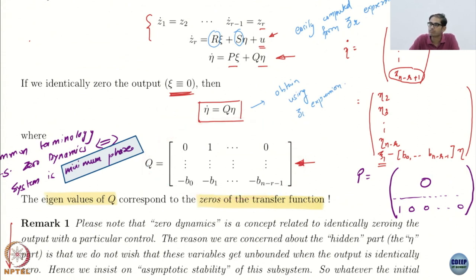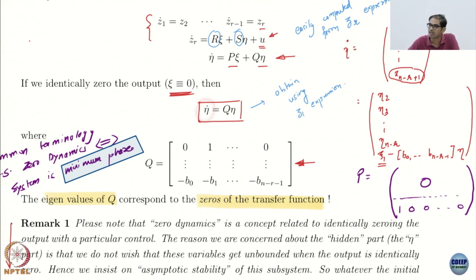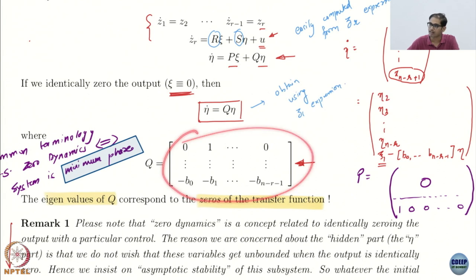You have a peak psi and a Q eta, and Q is coming from those coefficients. If psi is 0, the zero dynamics is just the eta dynamics governed by Q eta. This is an n minus r dimensional system. If you look at the structure, the eigenvalues of this system — or rather the coefficients of the characteristic equation — are defined by this Q matrix.